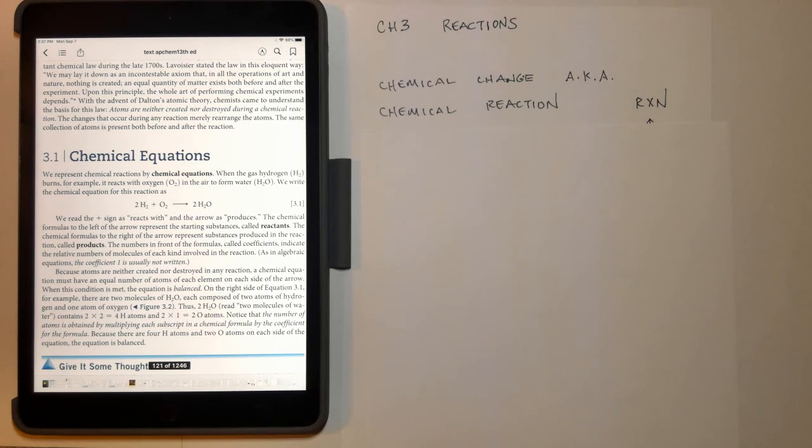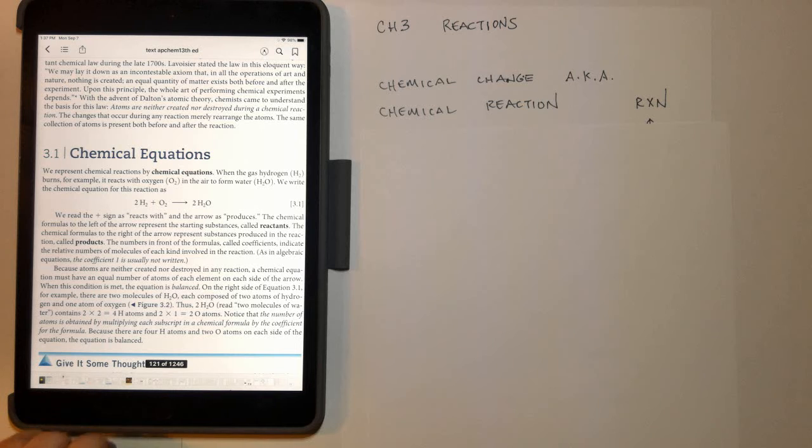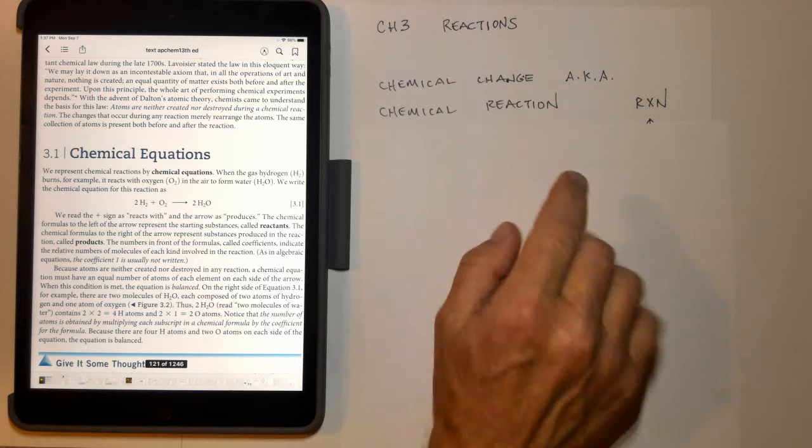In chapter 3 we start to look at chemical reactions. Reactions are chemical changes and before we go any further make sure that you have your notebook, a pencil, maybe a periodic table handy and write down these notes as we go along. We're in chapter 3 of the Brown LeMay Burstyn 13th edition text. Chapter 3, Chemical Reactions.